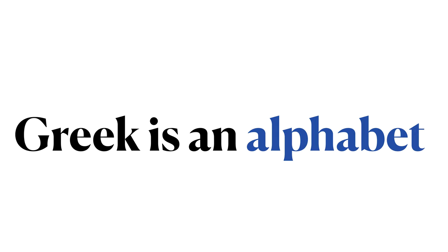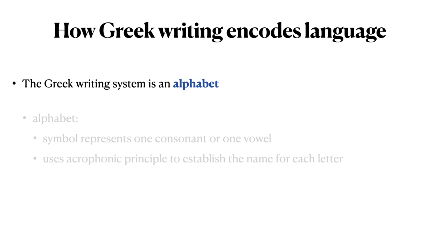Greek is an alphabet. This is the first alphabet that we're going to look at. The Greek writing system is an alphabet. What is an alphabet? Many of us who learned alphabetic systems are quite familiar with this. In an alphabet, each symbol, each letter, can represent either a consonant or a vowel.